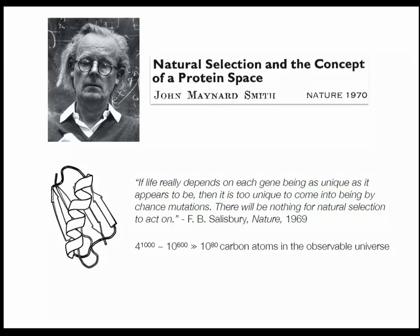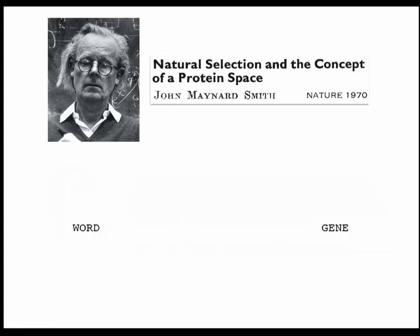Salisbury argued that if functional sequences are so rare, then even if one came into being by chance, natural selection would have nothing to work on — mutating that sequence would be highly unlikely to produce another functional one. Maynard Smith responded that Salisbury's argument implicitly assumes functional sequences are distributed randomly throughout sequence space, but sequence space might not be organized that way. He put forward this argument using a simple and effective word game: take two words — in this case "word" and "gene" — and try to convert one into the other by a series of single-letter changes such that all intermediate words are also members of the English language. You can change "word" to "war," "war" to "gore," "gore" to "gone," and "gone" to "gene." The analogy with evolution is straightforward: letters represent amino acids, single-letter changes represent amino acid substitutions, and the requirement that intermediate words are real English words is akin to the requirement that the protein remains functional.